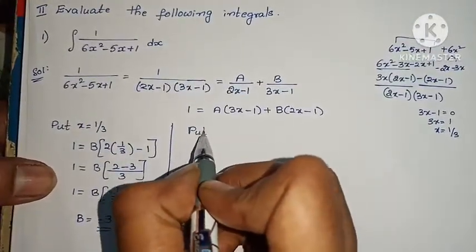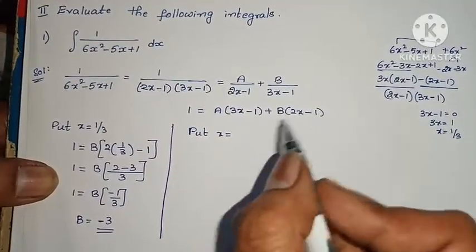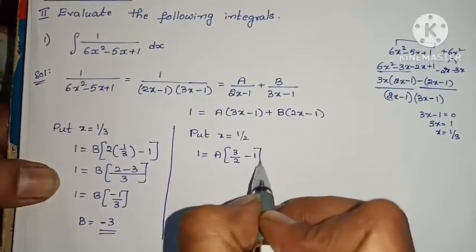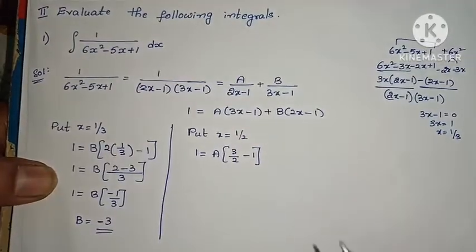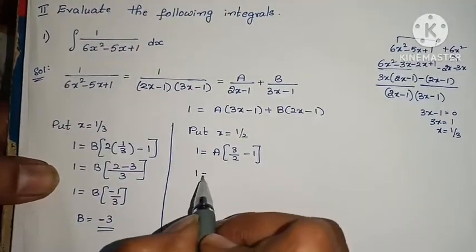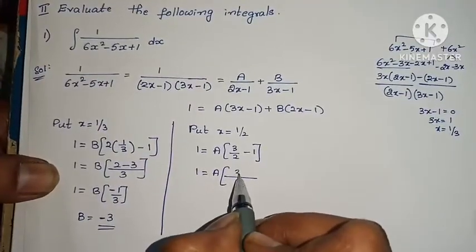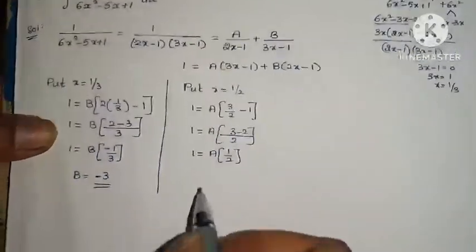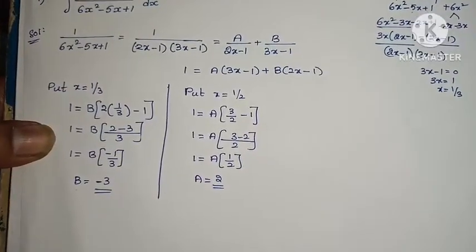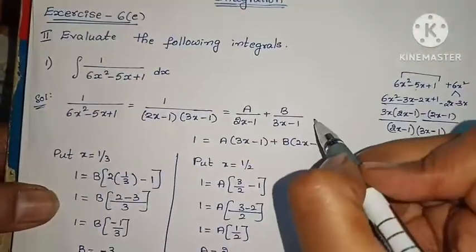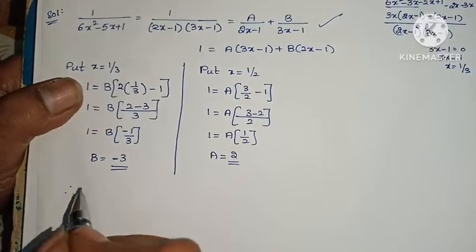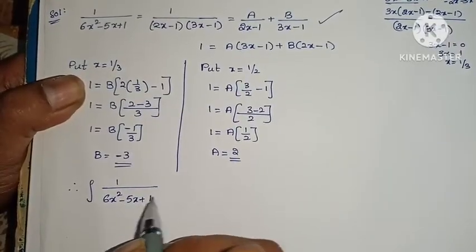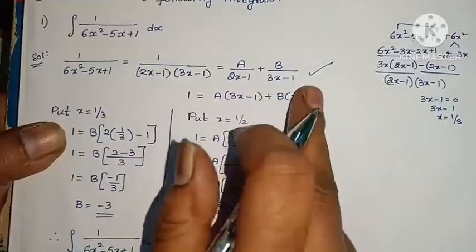Now put 2x minus 1 equals 0, so x equals 1 by 2. Substituting x equals 1/2: 1 equals A into (3 by 2 minus 1). Taking LCM 2: 1 equals A into (3 minus 2) by 2, giving 1 equals A into 1 by 2. Therefore A equals 2. Now substitute A and B values.